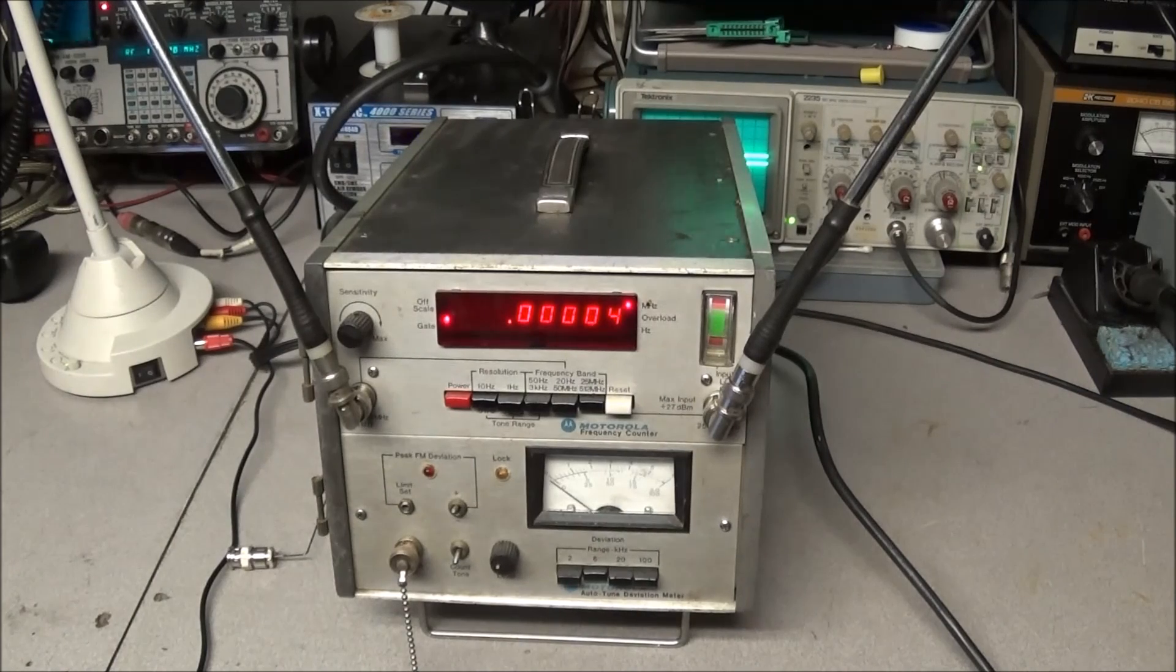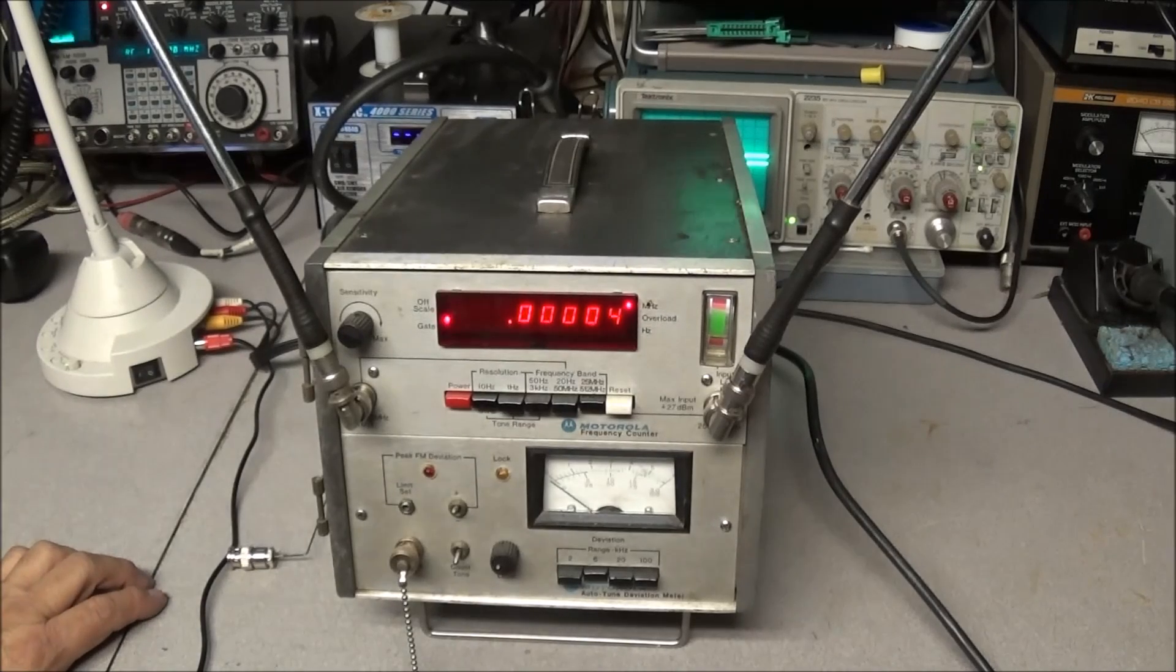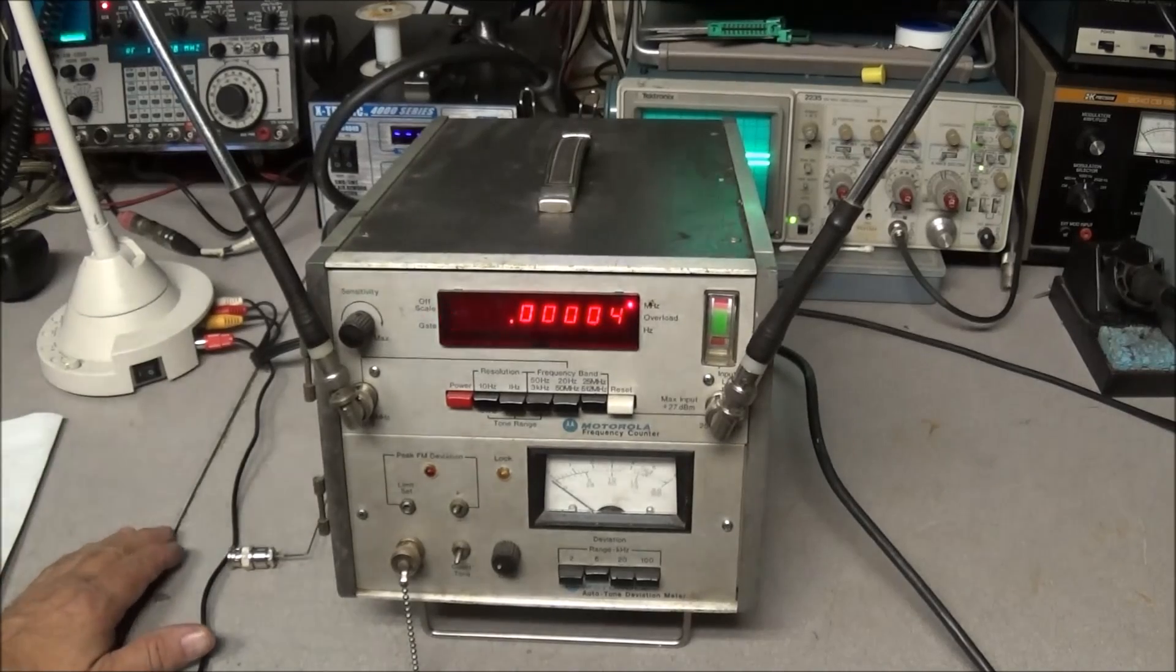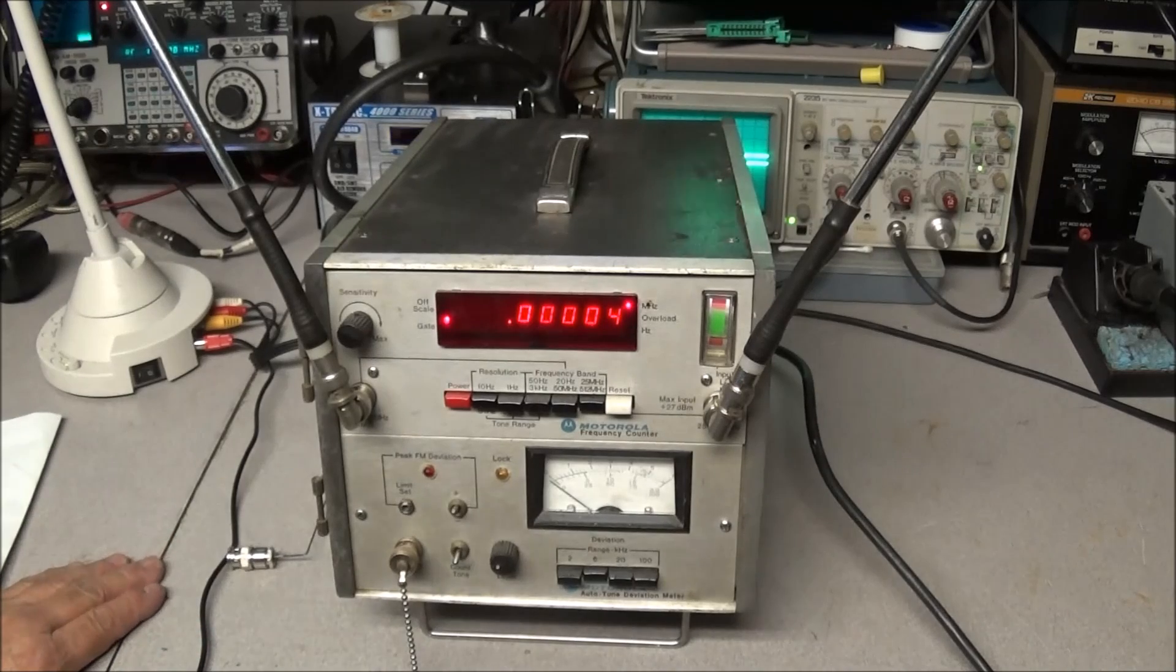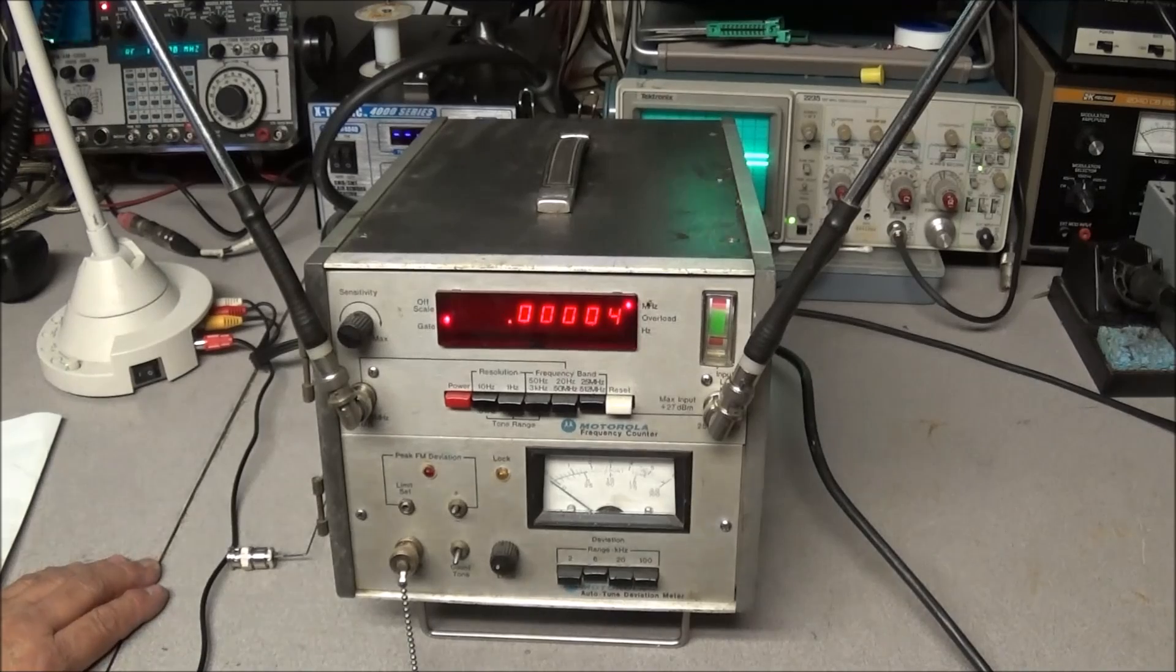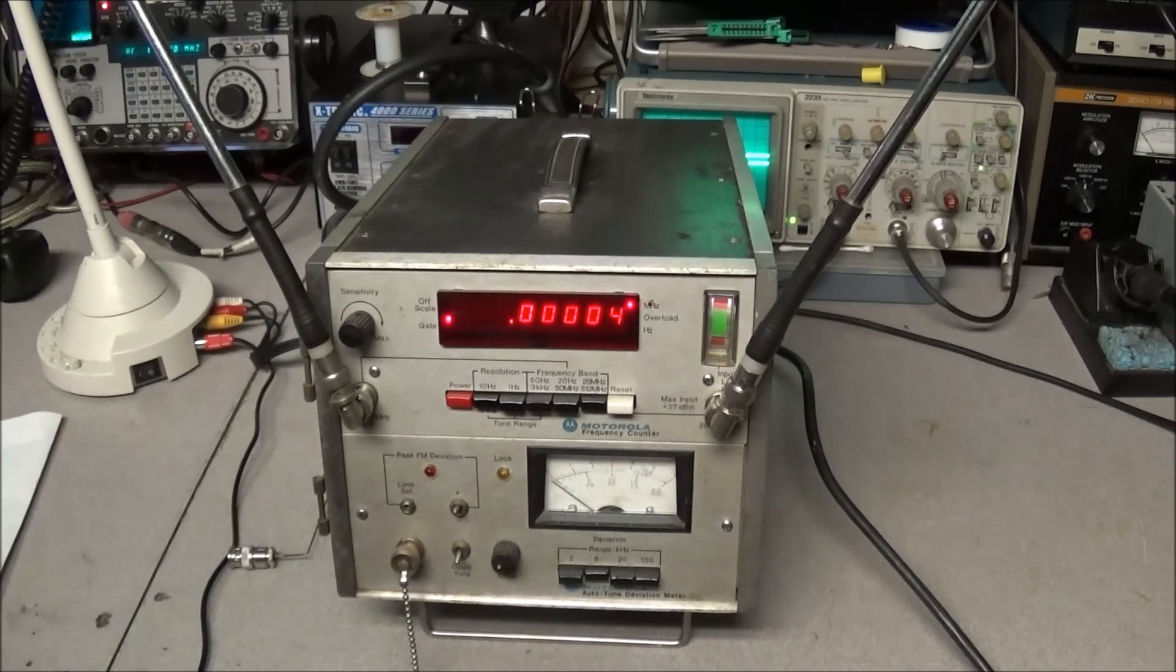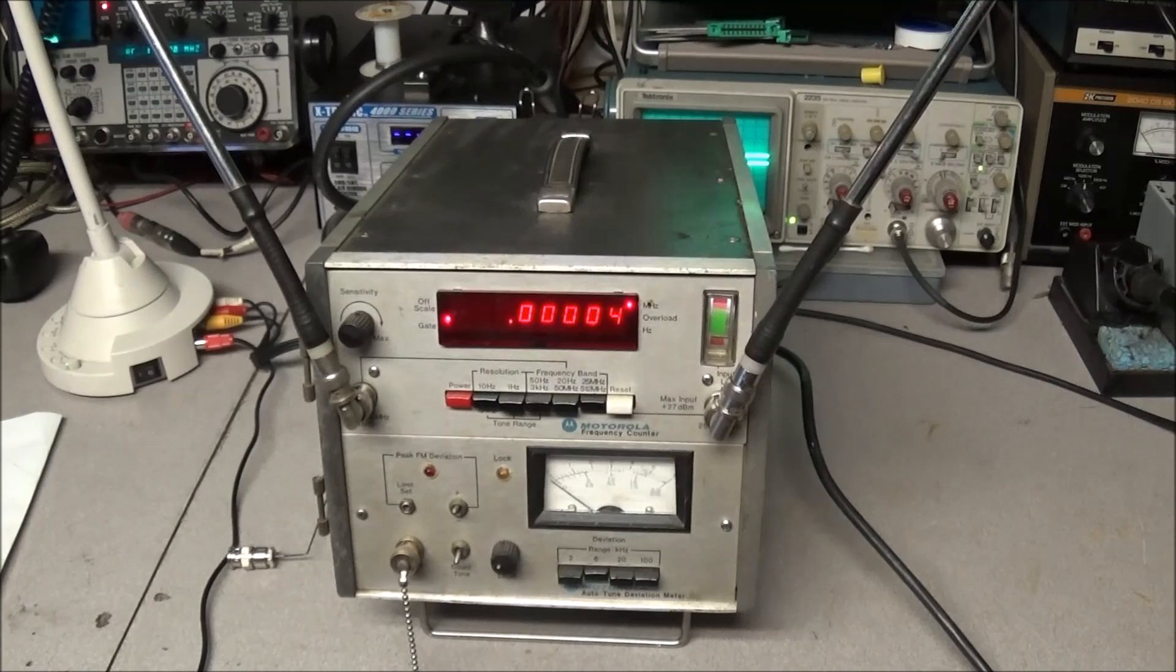Now this is a piece of equipment that I've had for a very long time. What this is is a Motorola model S-1344-ABC, and what this is is a frequency counter and auto-tune deviation meter. Plus it'll read tone out of the radio. I used to use this quite a bit when working on handheld radios because it was so convenient to use for checking the frequency and deviations and stuff. Later on the unit lost its sensitivity.